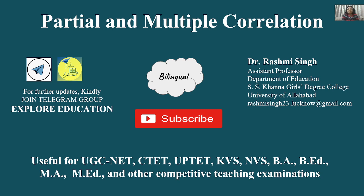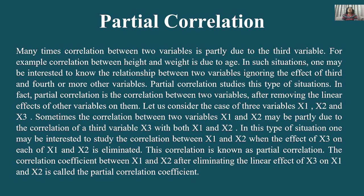Partial means aanshik (partial) and multiple means bahut saare factors (many factors). We have already discussed Spearman's rank correlation coefficient, product moment correlation coefficient, biserial and point biserial correlation. Now we are going to learn what multiple and partial correlation is. After this, tetrachoric and phi coefficient remain, then the correlation course will be complete.